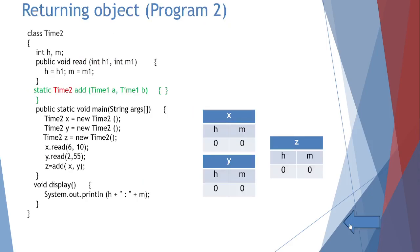In main, Time2 x, Time2 y, and a third object Time2 z = new Time2() are created because the add method is returning an object. After x.read and y.read, we write: z = add(x, y). The add method is written to return a value — an object of the same class — so 'static void' is replaced by 'static Time2'.